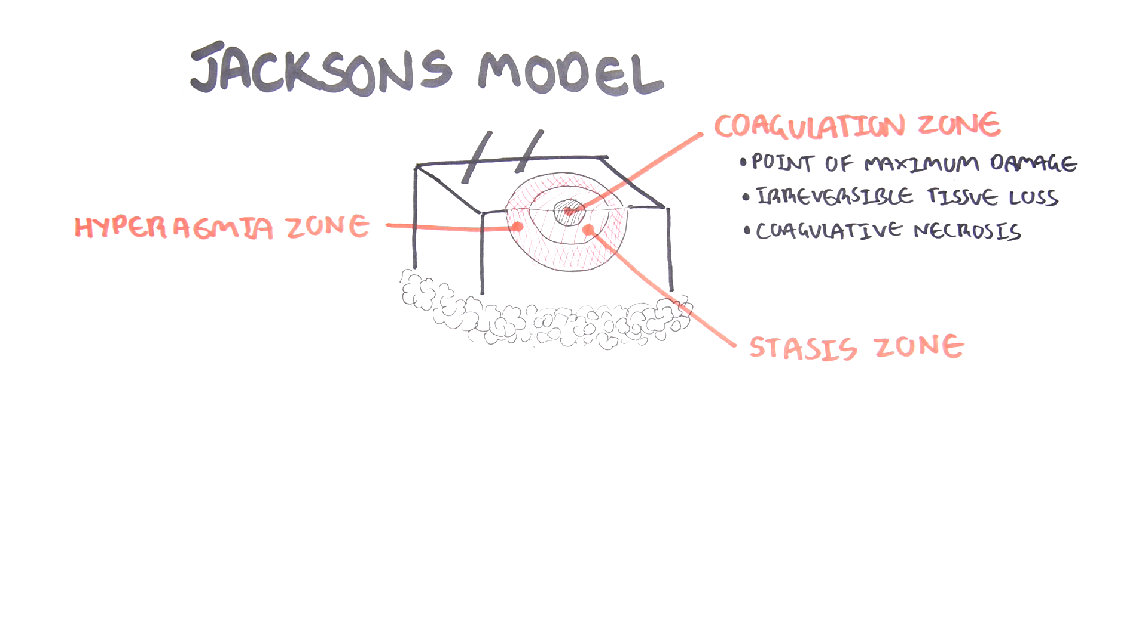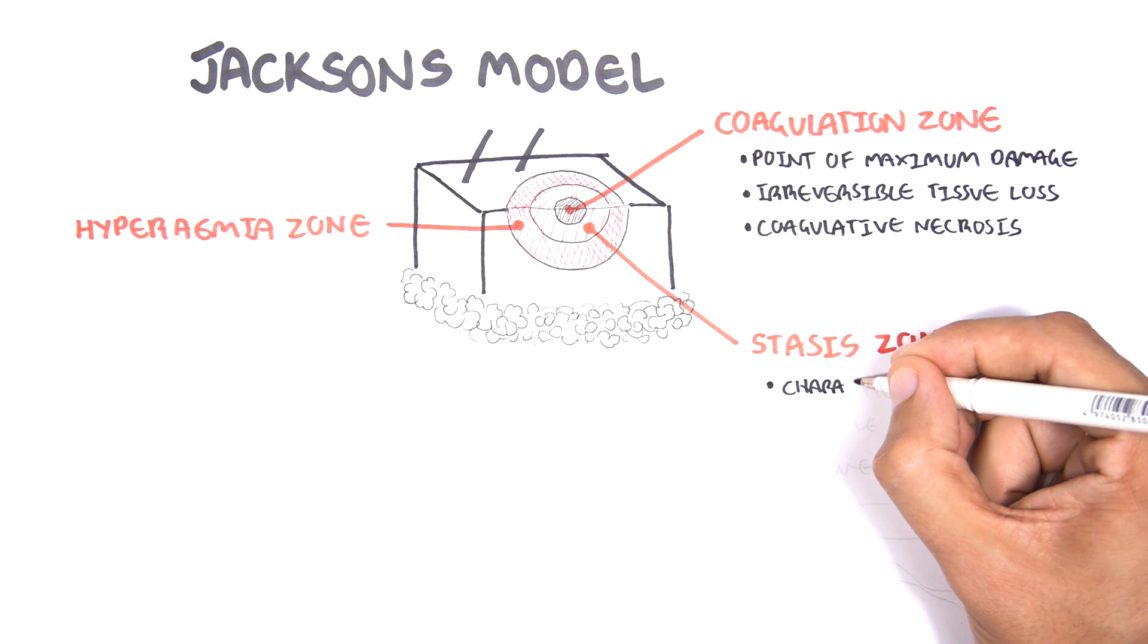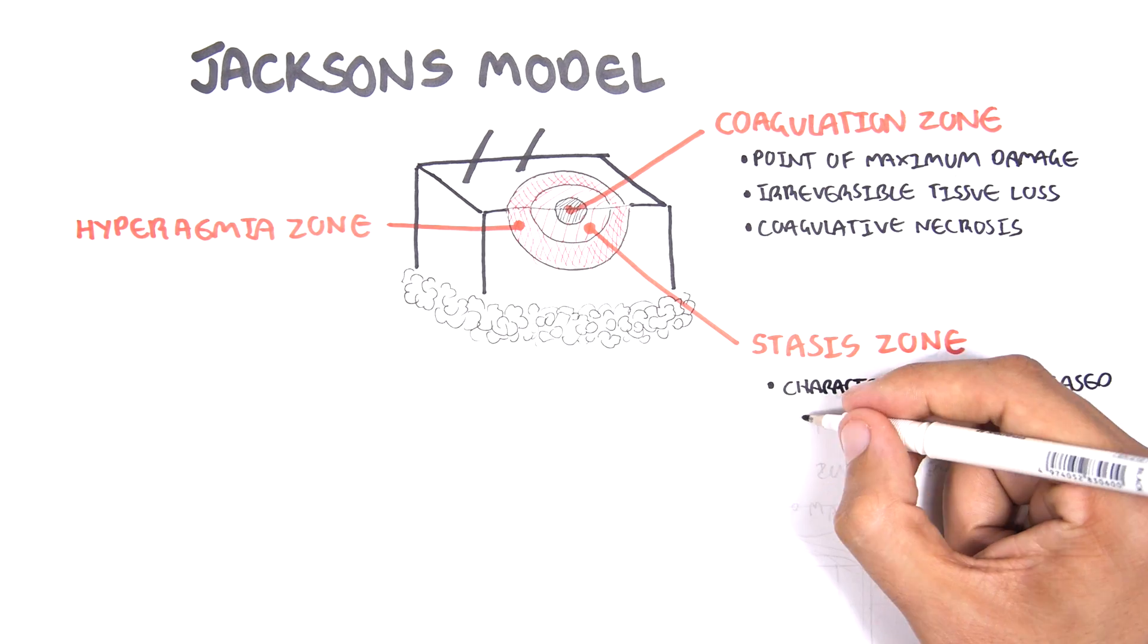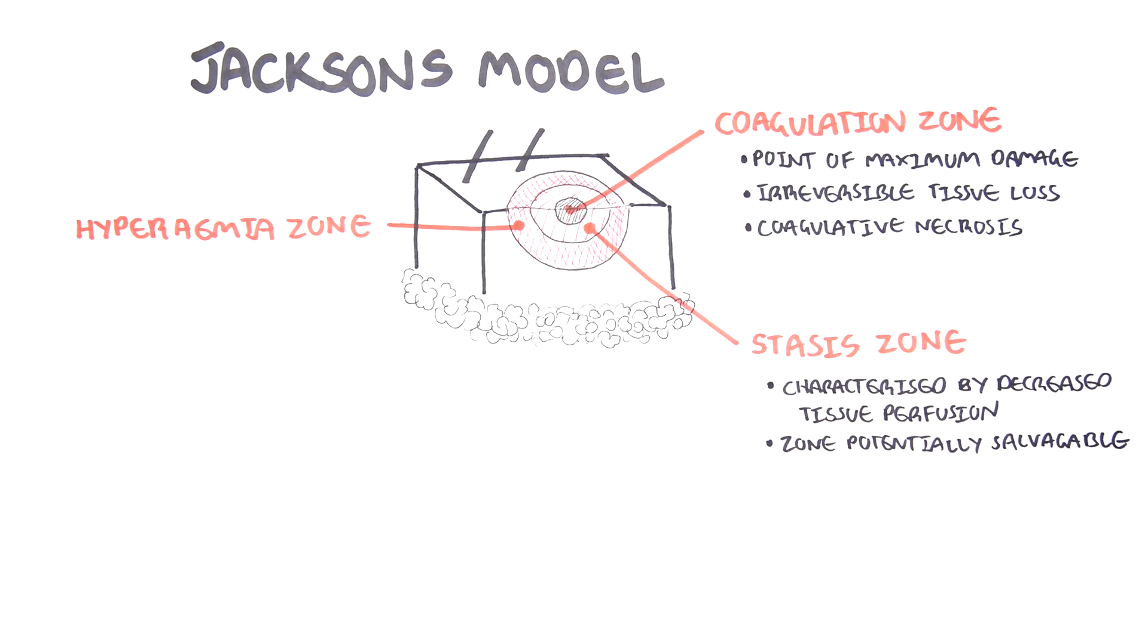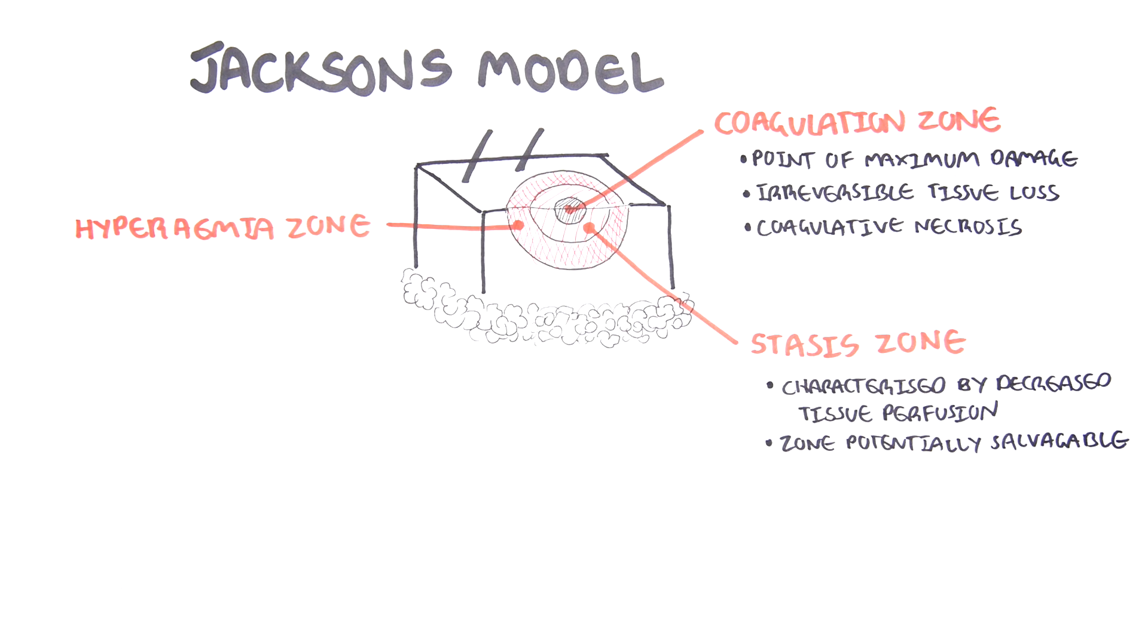Surrounding the coagulation zone of necrosis is the zone of stasis. In this zone, it's essentially characterized by decreased perfusion. This ischemic zone may progress to full necrosis unless the ischemia is reversed.